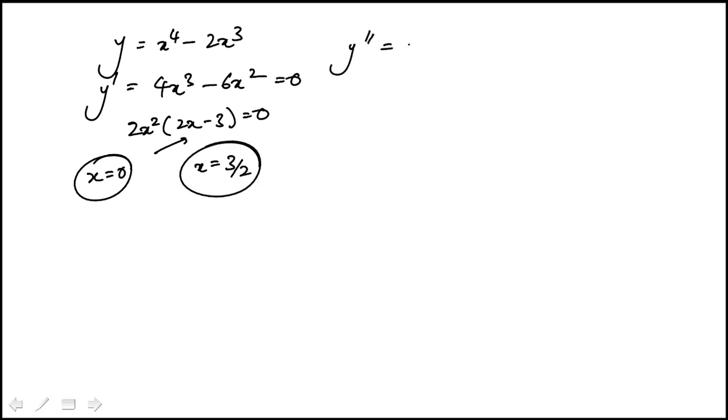So I'll find the second derivative and that would be 12x squared minus 12x. I'll pull out a 12x, x minus 1.